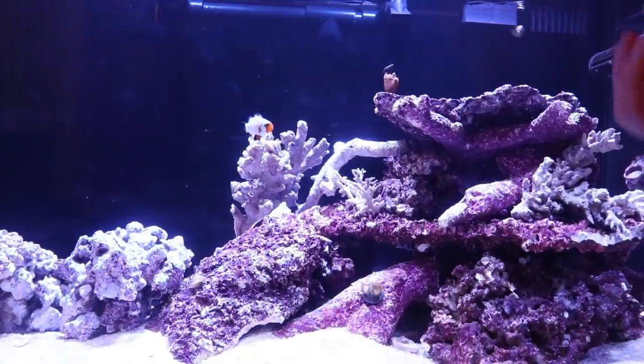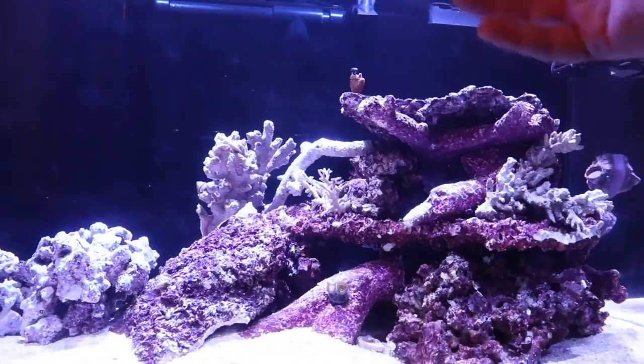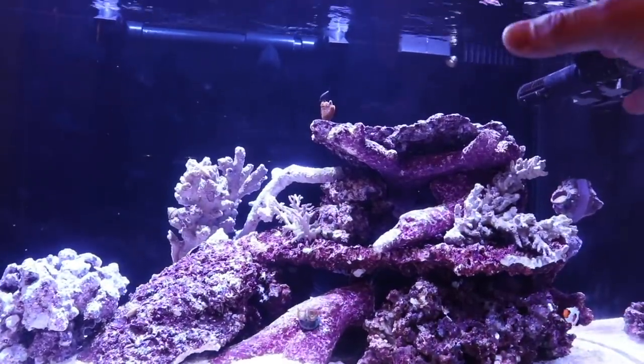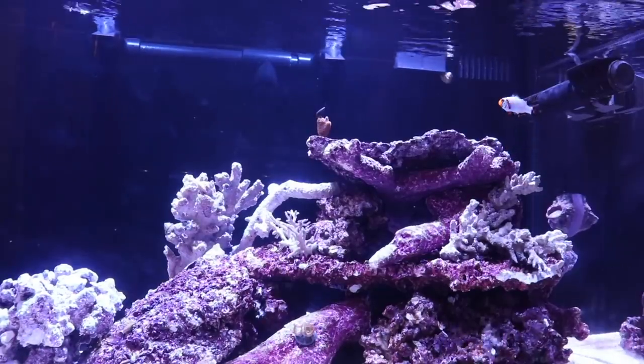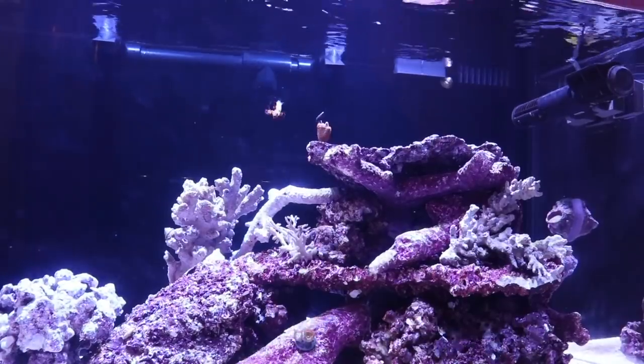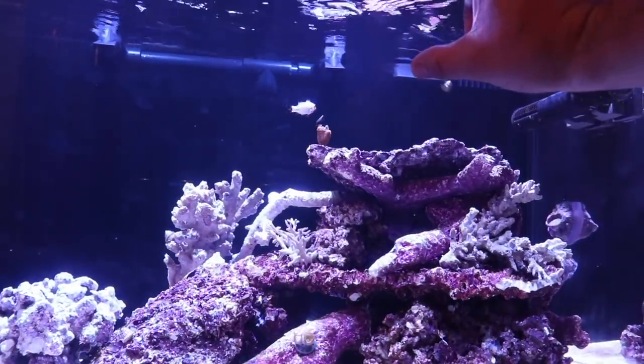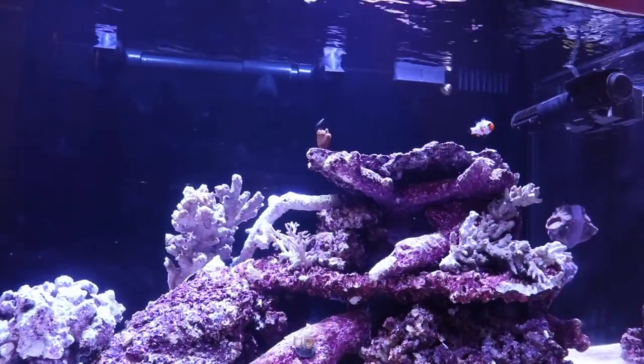My take on aquascaping is a little bit different nowadays than it used to be. I try to envision corals in the scape and what they would look like if they were growing out, as opposed to trying to achieve that with rock work. Old wives tale, I'm not sure if it's true or not, but if you build your aquascape closer to the surface, fish are less likely to jump out.